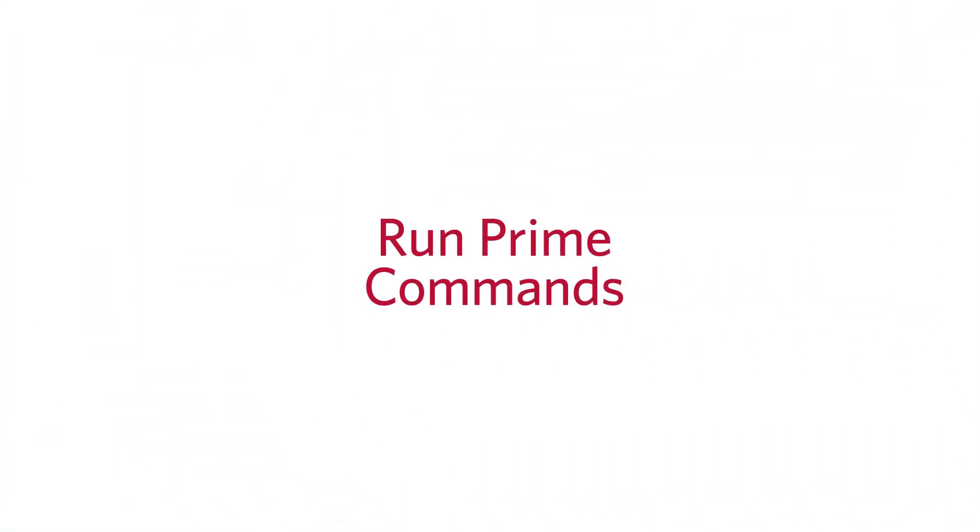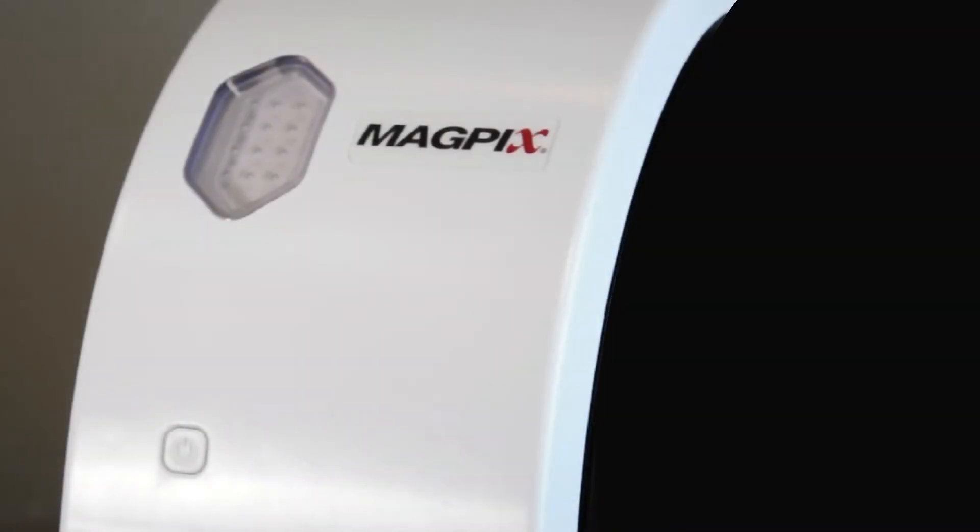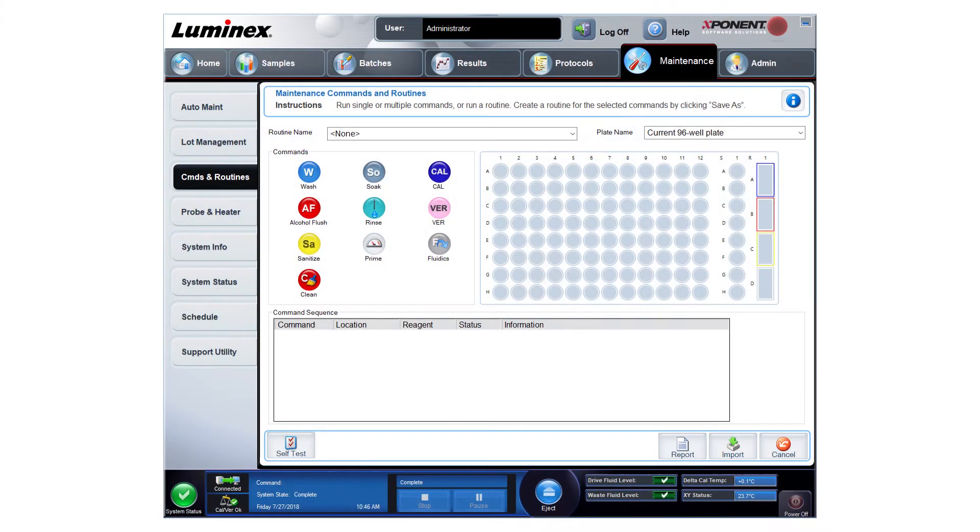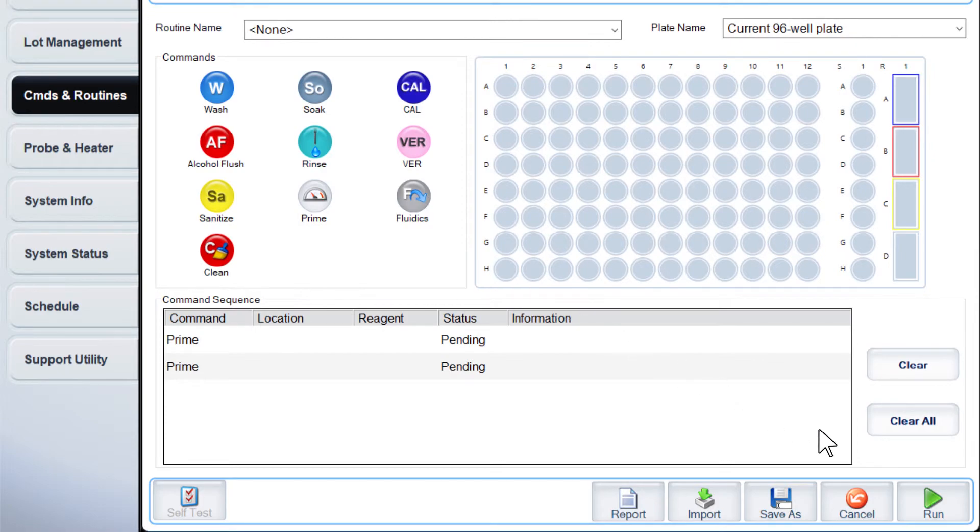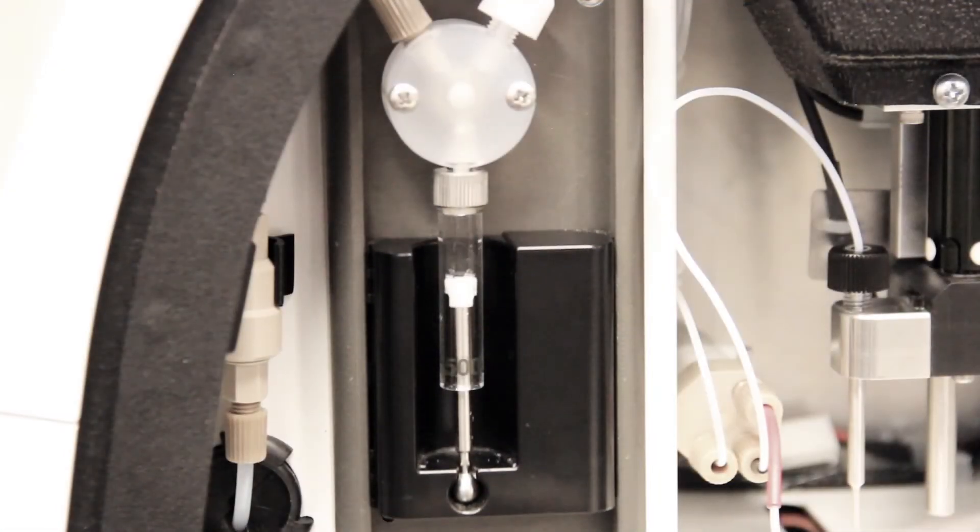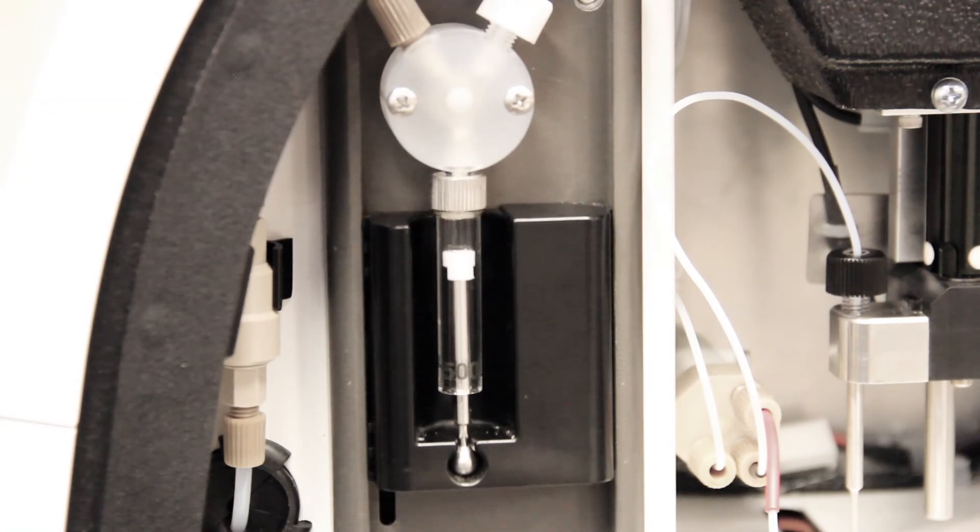Finally, prime the system before use. Plug in and turn on the MagPix. Using Exponent software, go to the Maintenance page, Commands and Routines tab and run two prime commands. Ensure there are no leaks in the syringe area during the prime.